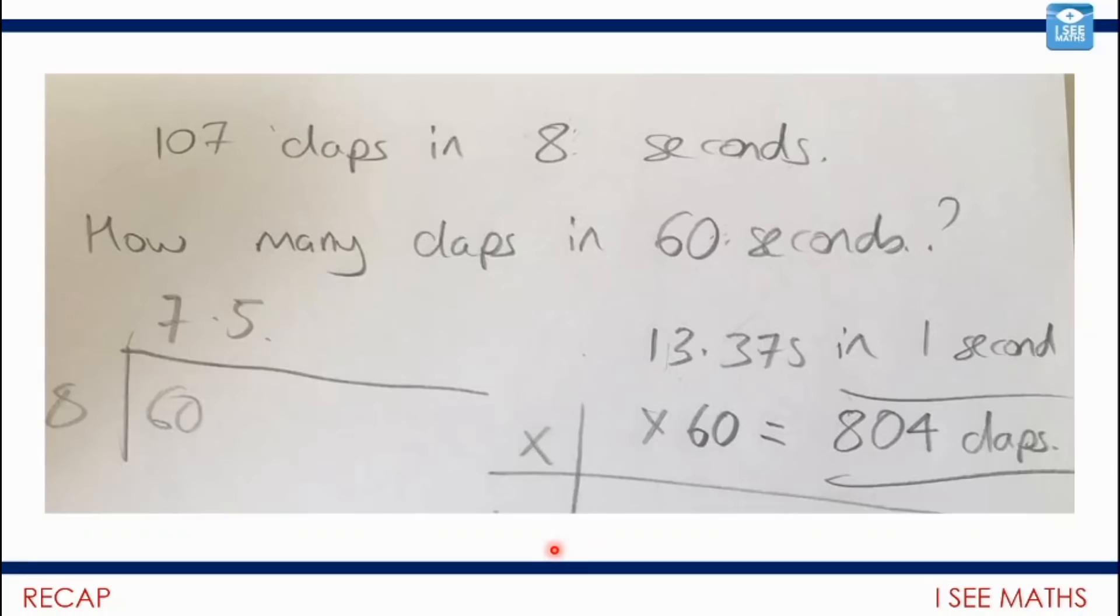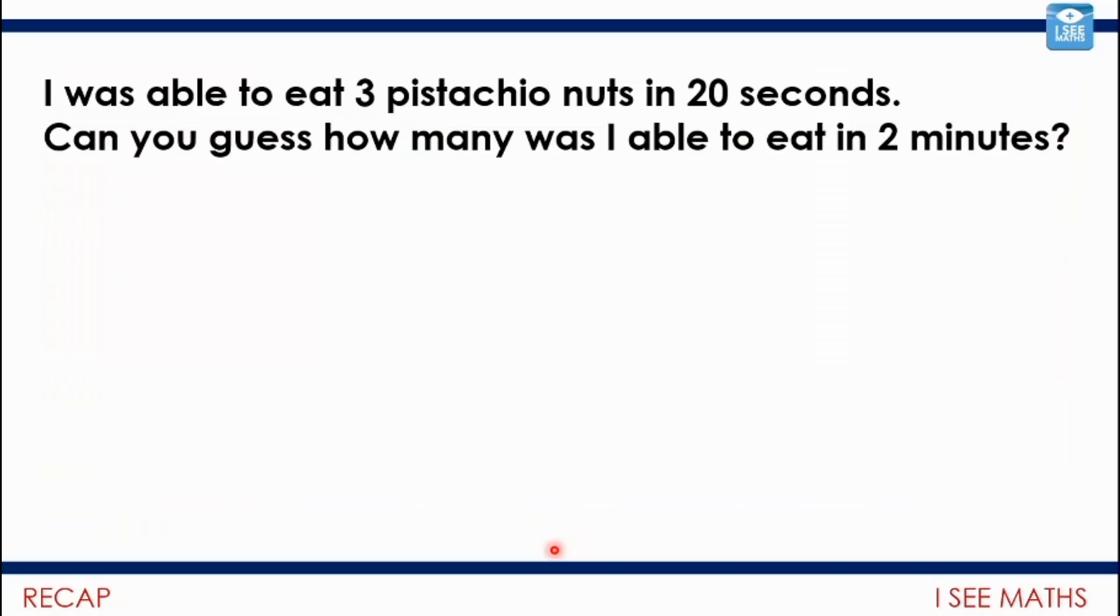We did actually have someone who got that estimate bang on. Now I also have to share this with you just because it made me laugh out loud when I got the email and the follow-up email. This is one of the examples that someone had sent: I was able to eat three pistachio nuts in 20 seconds. Can you guess how many I was able to eat in two minutes? There I was thinking well three in 20 seconds, that's about nine and about 18, maybe we'll slow down. I thought maybe 15 or 16.